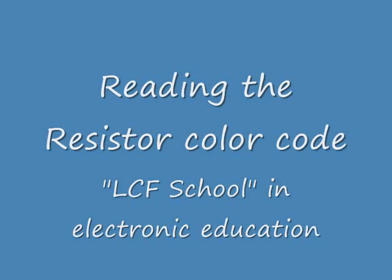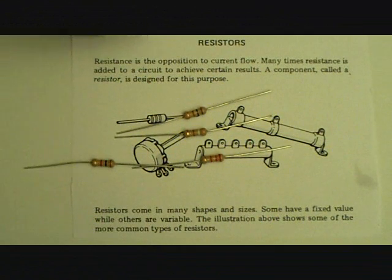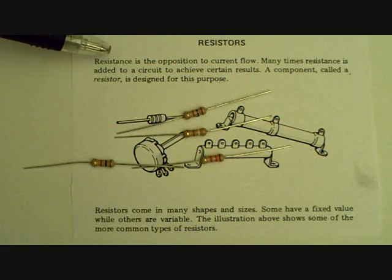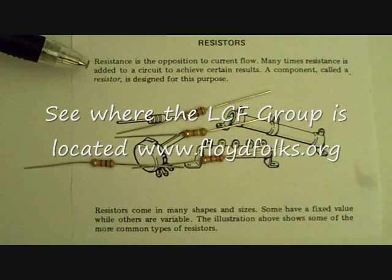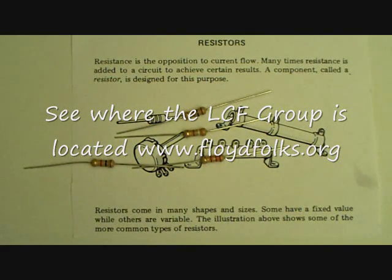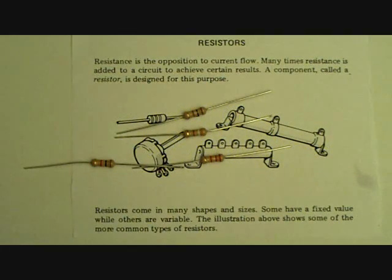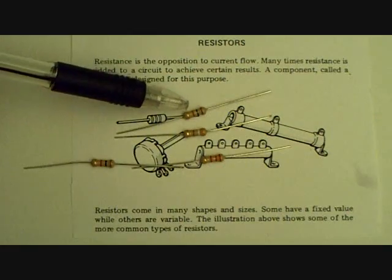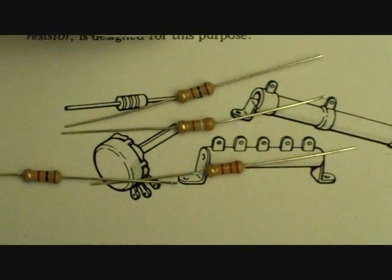Welcome to the LCF School — reading the resistor color code. Today we're going to talk about resistance and resistors. Resistance is the opposition to current flow. Many times resistance is added to a circuit to achieve certain results. The component used is called a resistor, and it's designed for this purpose. We're going to learn the electronic aspects of resistors in a future lesson, but today's lesson will teach us how to tell the value of a resistor by reading the color code on the resistor itself.